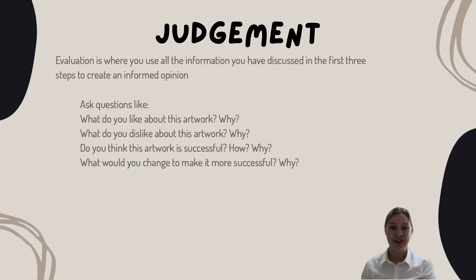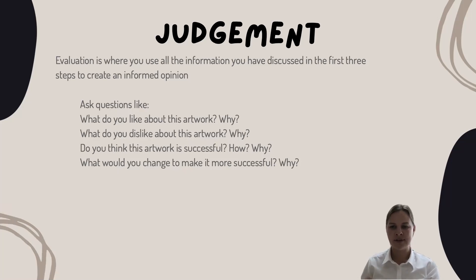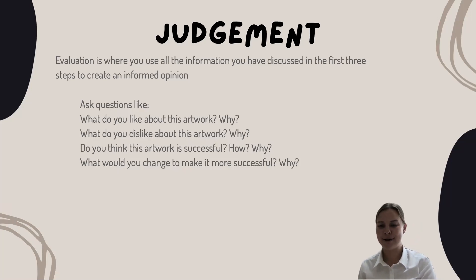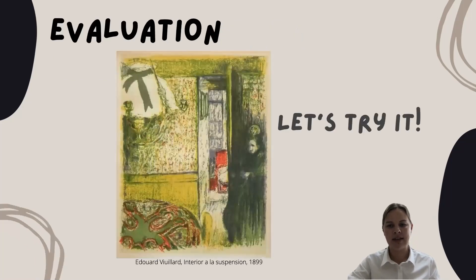And the last one is super easy — it's judgment. This is where you get to look at everything that you just wrote and decide if you like this artwork or not. Do you like it? Do you not like it? Why? Do you think it's successful? Do you think that it needs more work to be successful? You don't need to spend a lot of time writing about this step, but that's the fun part of art — you get to make some judgments and decide if it's worthy of looking at for a long time or if it's something you'd just pass by quickly. So take some time, finish up your responses, and I look forward to talking about these different answers in our next class.